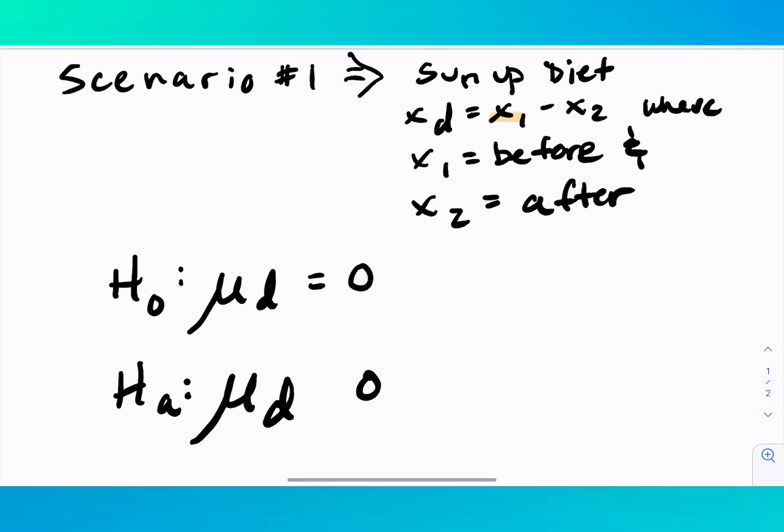So in this scenario, we want to see if sunup diet is effective. And so we are measuring differences by taking before weight and subtracting after weight. Now, if a diet is effective, that would mean that you would expect a positive difference, meaning that if you show weight loss, you would expect the before weight to be greater than the after weight, which means that the difference between the two would be positive given the direction of subtraction.